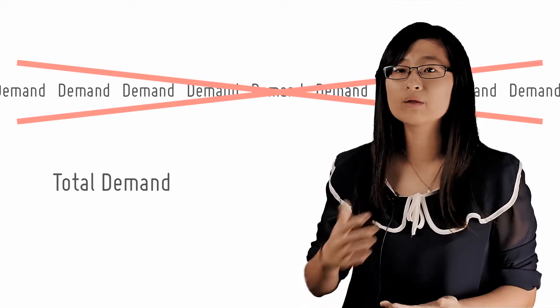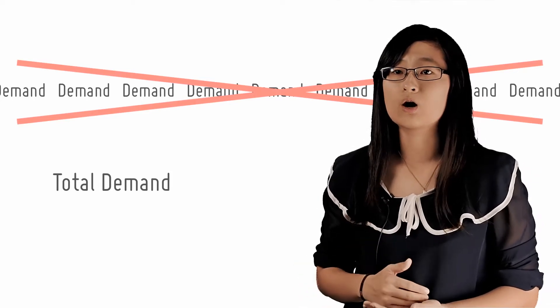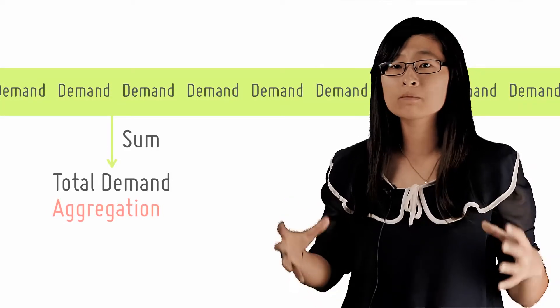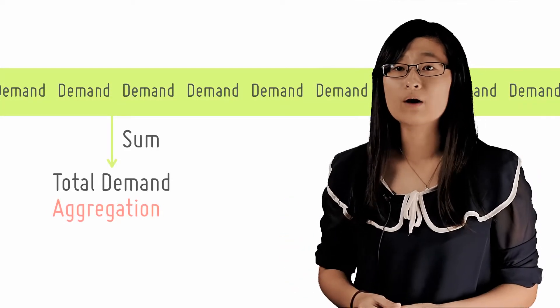And to do that, we simply add up all the demand curves for every market in the economy. And this process of summing individual economic variables to obtain economy-wide totals is called aggregation.